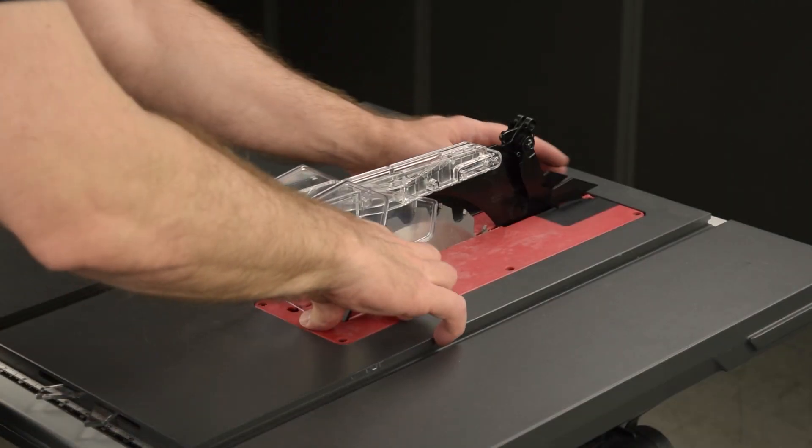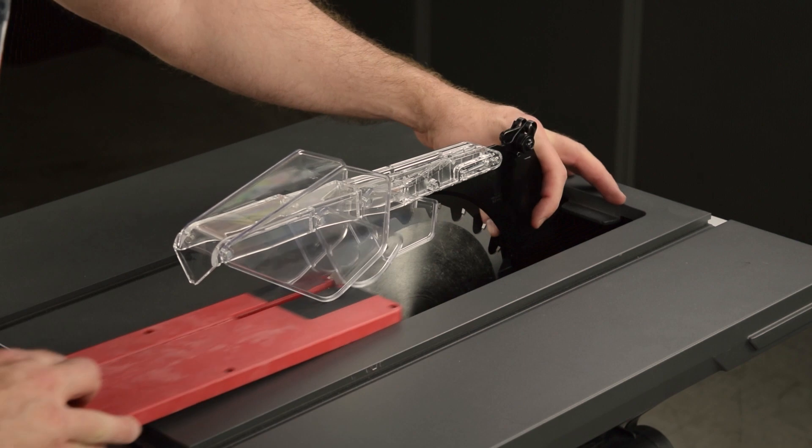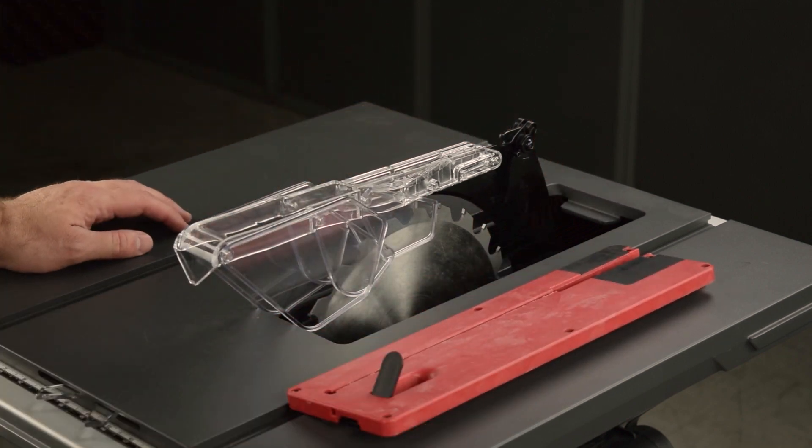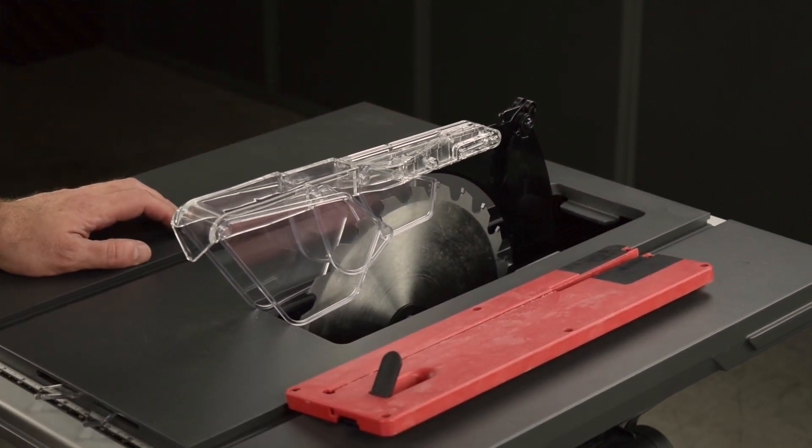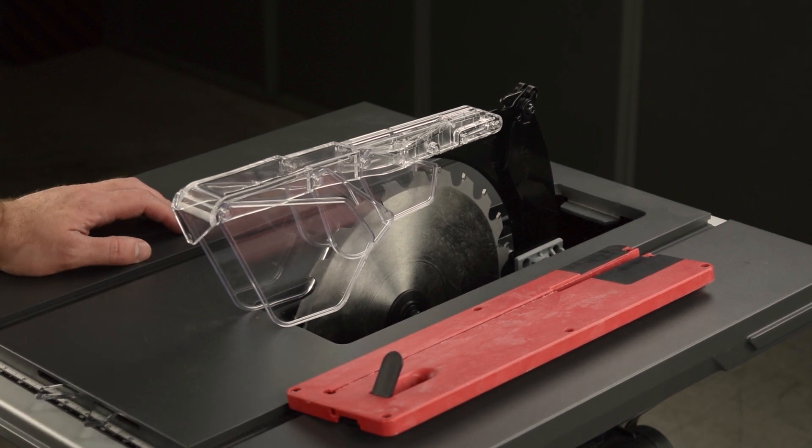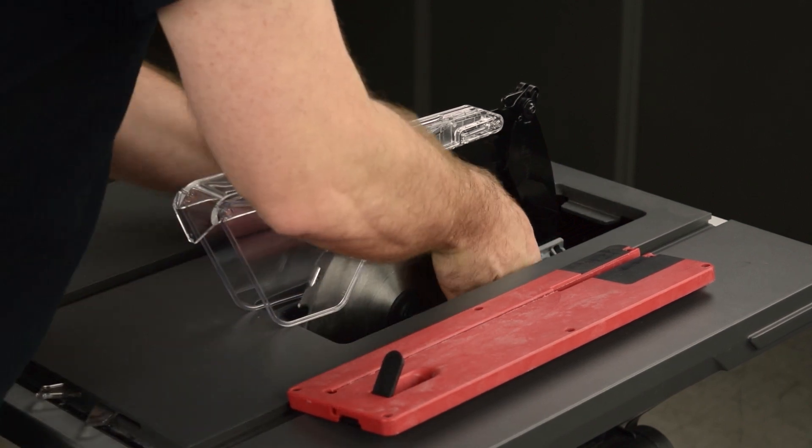Remove the insert and then fully raise the blade. Remove the blade guard, or the riving knife if that's installed.